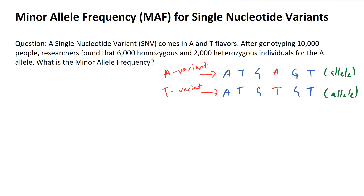We're told that we have a single nucleotide variant that comes in A and T flavors, which is another way of saying we've got two alleles for this gene. After genotyping 10,000 people, researchers have found that 6,000 of these individuals are homozygous and 2,000 are heterozygous for the A allele. We want to know what is the minor allele frequency, and the very first thing you need to figure out is whether the A allele or the T allele is the actual minor allele.